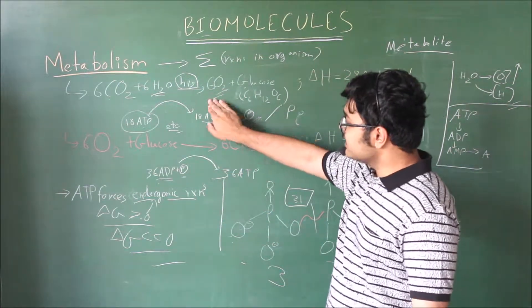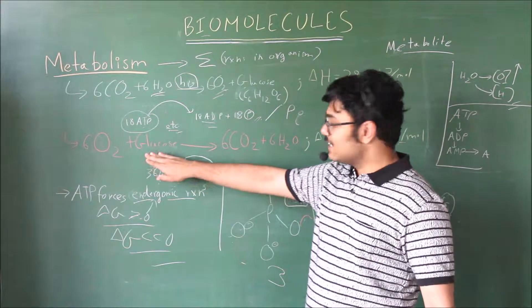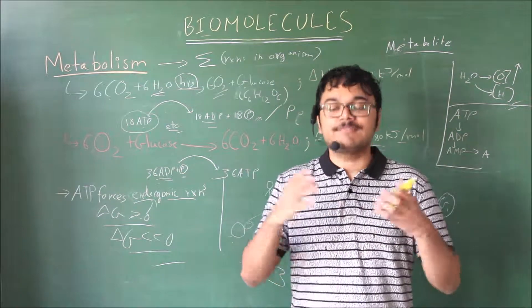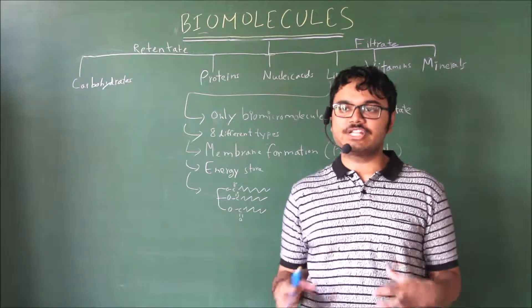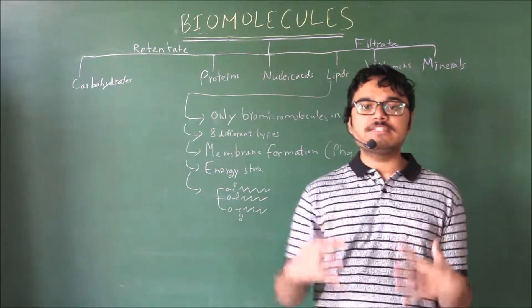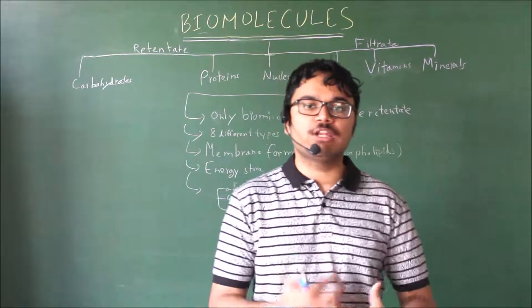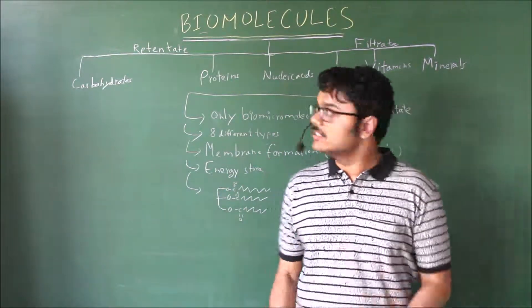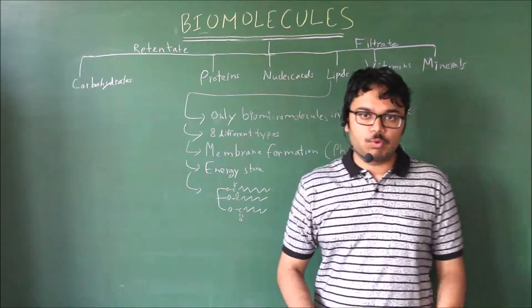So this is the basic sum total of metabolism in the entire ecosystem. Plants do this and all organisms do this - they create ATP and the ATP forces endergonic reactions. This is the basic theme behind metabolism. Now that we have established how metabolism works and how all these biomolecules are interconnected via these metabolic pathways, let's talk about what the biomolecules actually are.